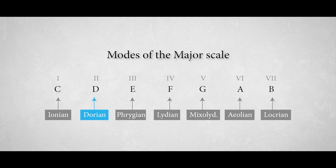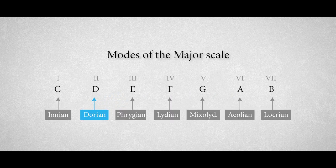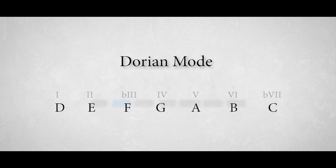The Dorian mode, which is the second mode of the major scale, is best described as a minor scale with a raised sixth degree. The sound is sad but creates a hopeful feeling caused by the raised sixth degree.